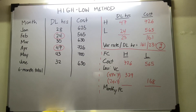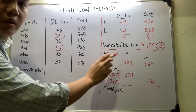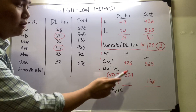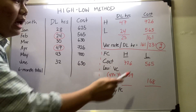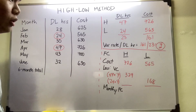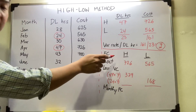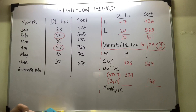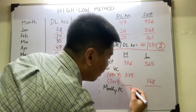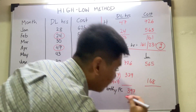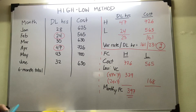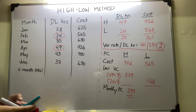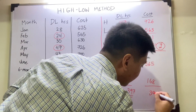Now you have both the total cost and the total variable cost. Subtract the total variable cost from the total cost to get the total fixed cost. For the high point: 726 less 329 equals 397 pesos. To prove it, the lowest point should give the same result: 565 less 168 also equals 397 pesos.